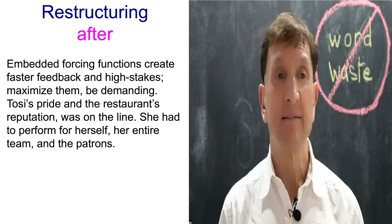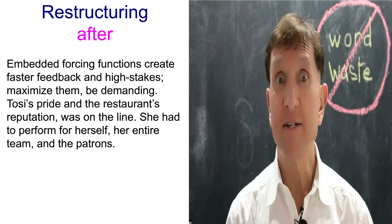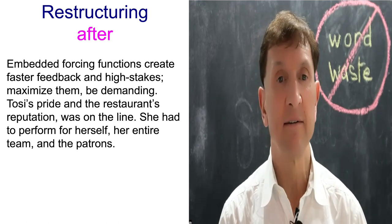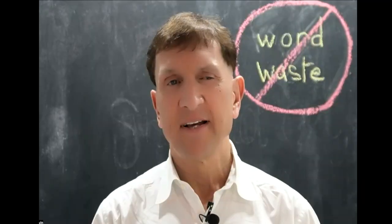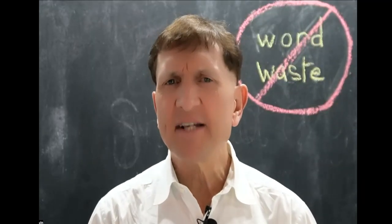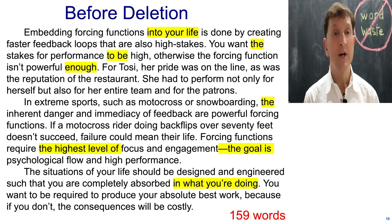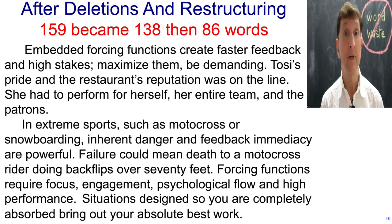Let me read it to you again. Embedded forcing functions creates faster feedback and high stakes. Maximize them. Be demanding. Tosi's pride and the restaurant's reputation was on the line. She had to perform for herself, her entire team, and the patrons. Much shorter, right? And it's a little bit easier to focus. I did that to all three paragraphs. When I got out my axe and deleted, 159 words went down to 138. And then I got restructuring, and 138 became 86 words. Much more concise and I think much clearer.